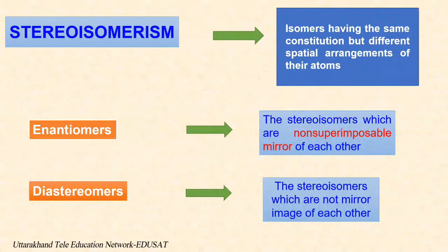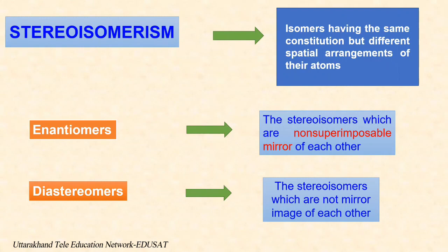Stereoisomers have the same molecular formula, same constitution, same physical and chemical properties, but different spatial arrangement of their atoms. There are two types: enantiomers and diastereomers. Enantiomers, also known as optical isomers, are two stereoisomers related to each other by a reflection — they are mirror images of each other that are non-superimposable. Two enantiomers have the same chemical and physical properties except for the direction in which they rotate plane-polarized light. Diastereomers are stereoisomers not related by a reflection; they include cis-trans isomers, meso compounds, and non-enantiomeric optical isomers.